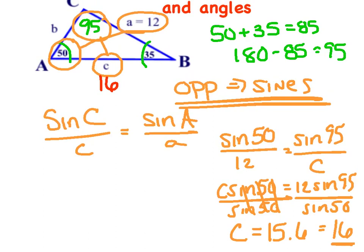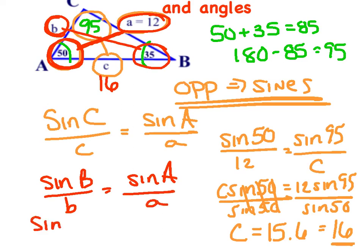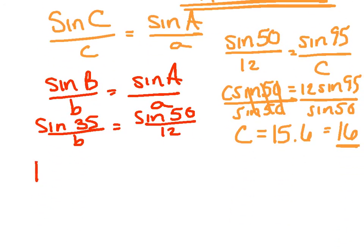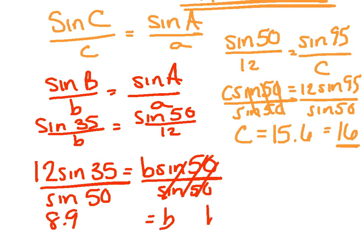I need to go get side B now. I'll still use the given fact — I could use law of sines a second time with 50 and 12, then B and 35. Sine of B over B equals sine of A over A. Sine of 35 is across from B, and sine of 50 is across from 12. Cross multiply: 12 sine of 35 equals B sine of 50. Divide out sine of 50, and I get B equals 8.9, or B equals 9.